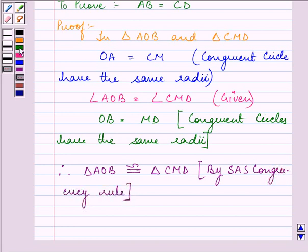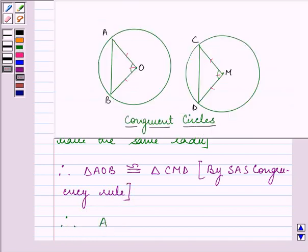So we can say that therefore, AB is equal to CD by CPCT, that is congruent parts of congruent triangles. These are congruent triangles we have proved over here. So all the congruent parts of these congruent triangles will also be equal to each other.